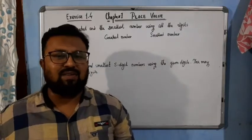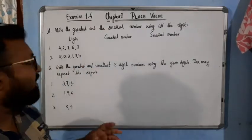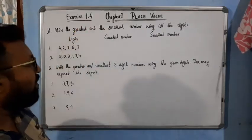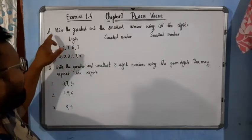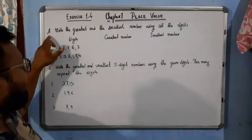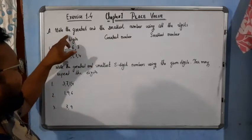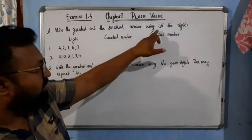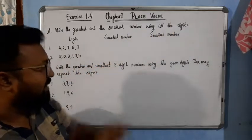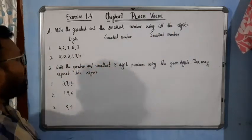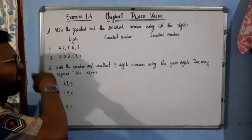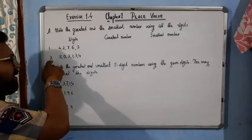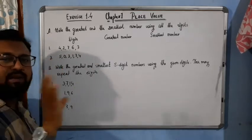Hello students, now come to the next exercise, exercise 1.4. Here we have only two questions. Question A: write the greatest and the smallest number using all the digits. They have given us a few digits, from which I have opted only examples 1 and 3 — the rest you can do by yourself.